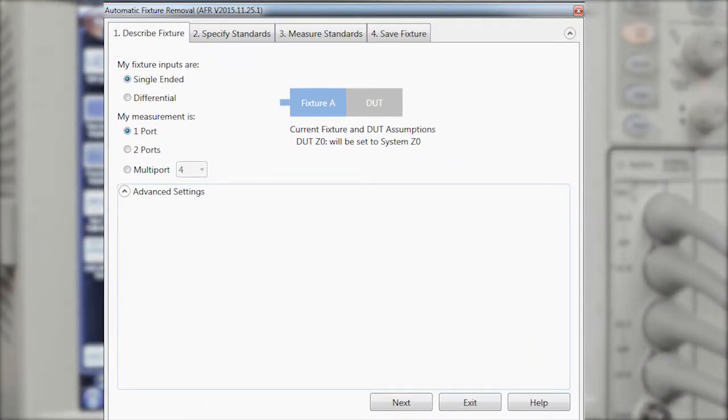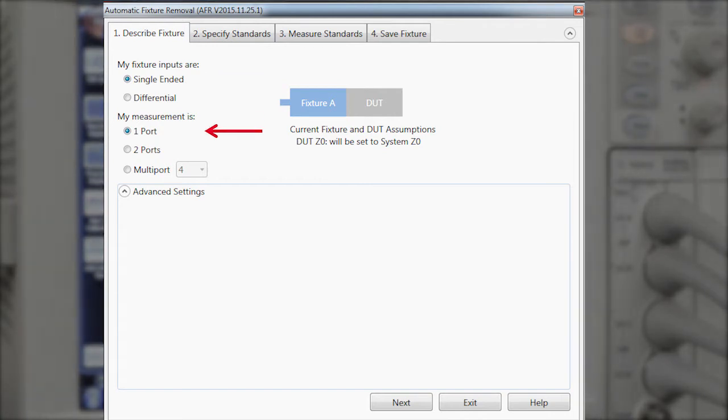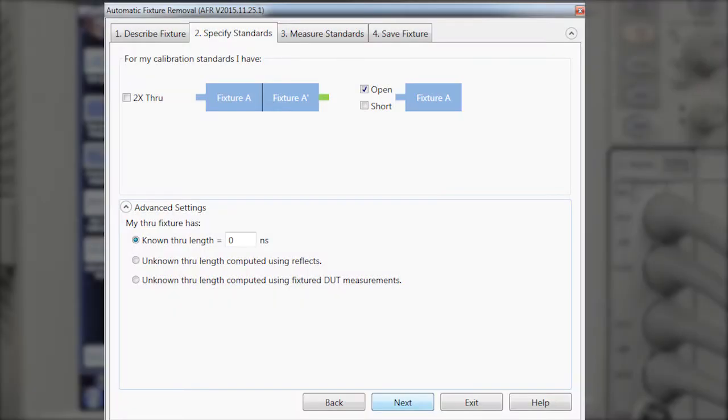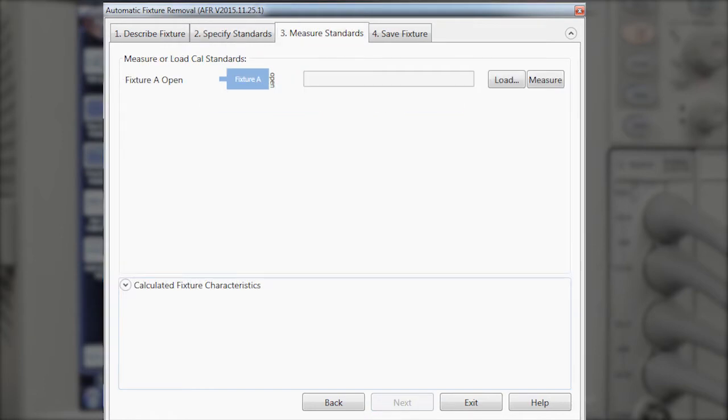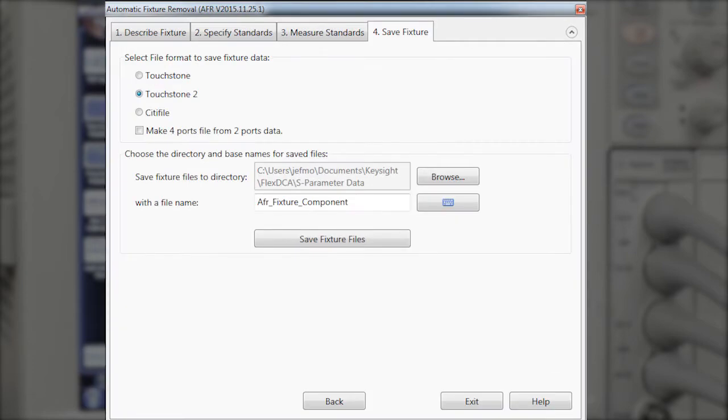This asks us a few questions about the fixture, and it is a single-ended fixture, and we're going to measure one port because you only have access to one port. This lets us tell AFR whether we're going to be measuring an open or a short, and our fixture is open. And finally, it's time to make the measurement. So we click measure, and now we can just save the file.